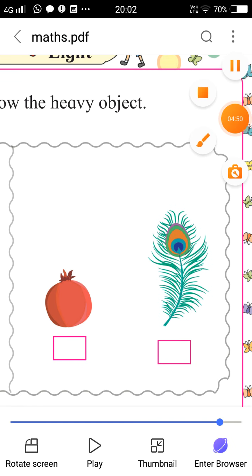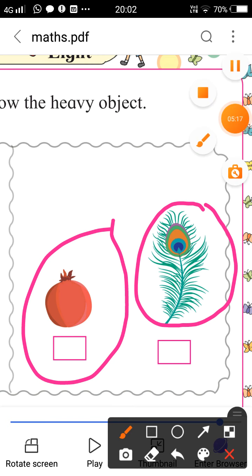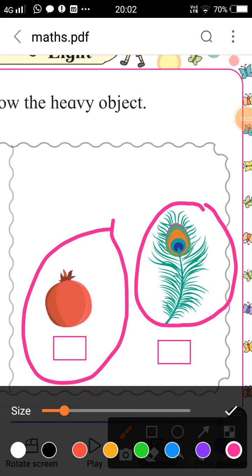Look at this second picture. Here it is a pomegranate. This is a pomegranate, dalimba. And here is a feather, a peacock feather, mora cha pees. Tell me, is peacock feather heavier or pomegranate? Yes, pomegranate is heavy than peacock feather.